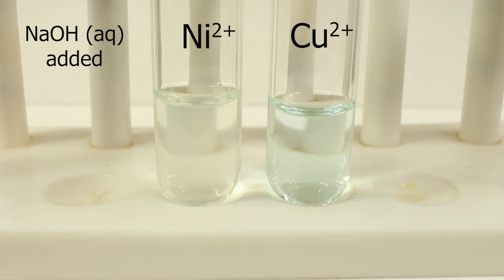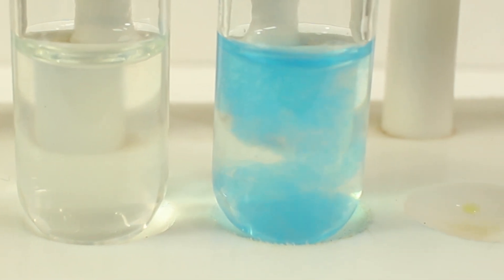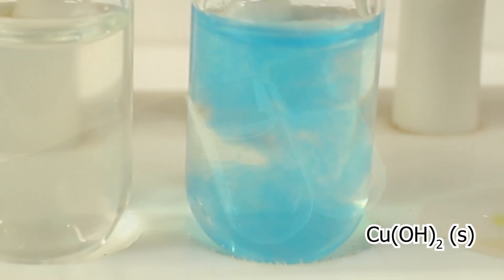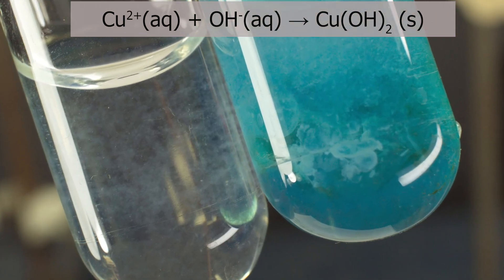Nothing clearly visible in case of nickel. It's white greenish precipitate. But in case of copper II, gelatinous blue precipitate. Positive result for copper ions presence on addition of sodium hydroxide.